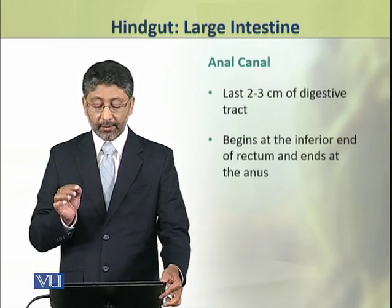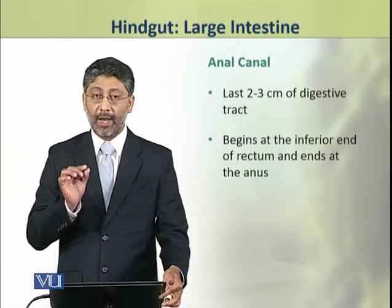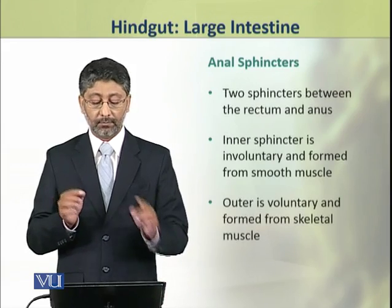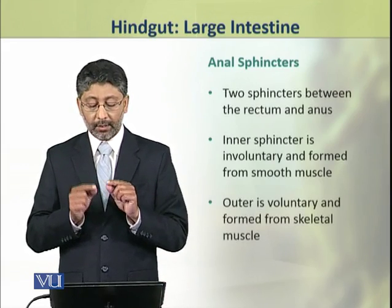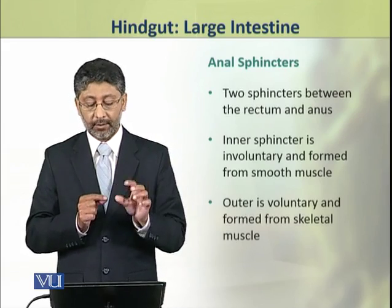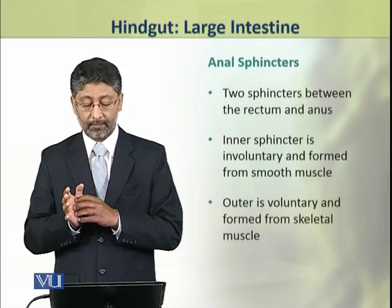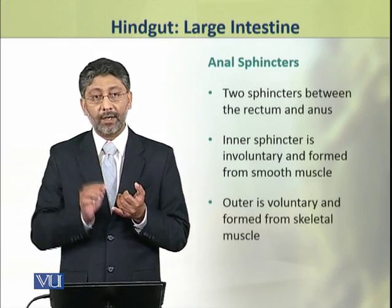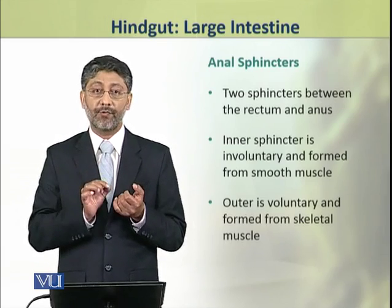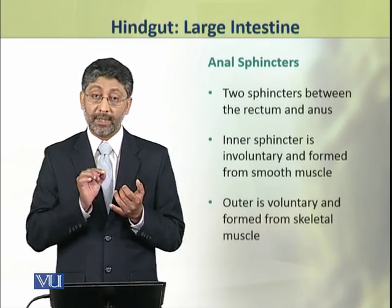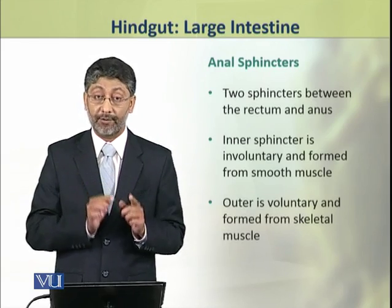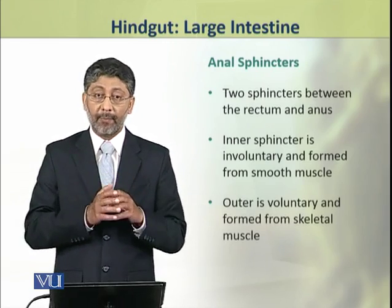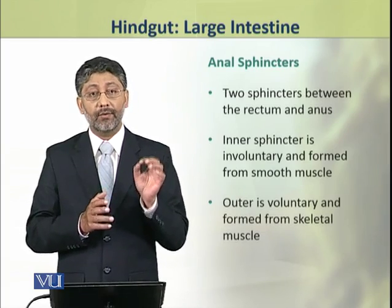The anal canal starts from the inferior most end of the rectum and ends at the anus. There are two sphincters lying between the rectum and anus. The first is the inner sphincter and the second is the outer sphincter. The inner sphincter is composed of smooth muscles and is involuntary, while the outer sphincter is made up of skeletal muscles and is voluntary.